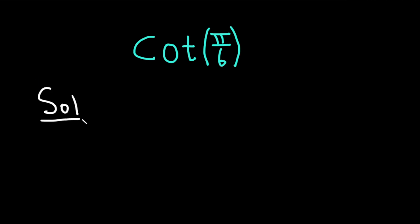Solution. One way to do it is to remember that the cotangent of x equals 1 over the tangent of x. So we can just replace x with pi over 6. This is the cotangent of pi over 6, and that's equal to 1 over the tangent of pi over 6.